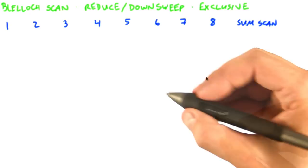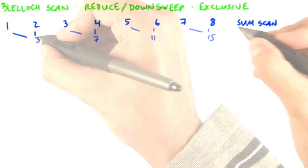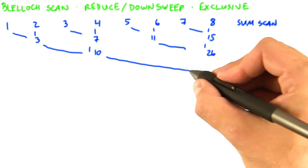Let's start with the reduction. The reduce step actually looks like a fairly standard reduction. The first step adds neighbors one hop away. The next step adds neighbors two hops away. And the third step is going to add neighbors four hops away. However, unlike in reduce, we're going to keep the intermediate results around.